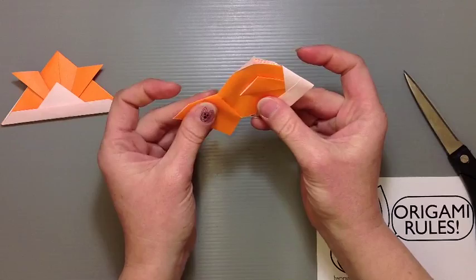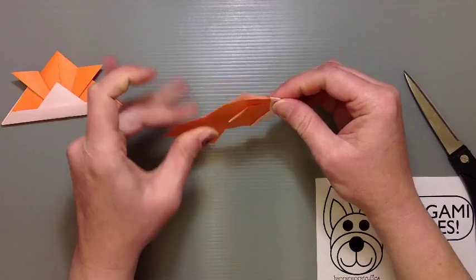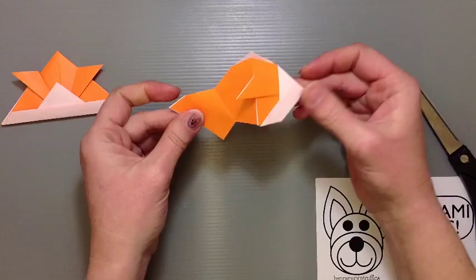Bring everything closed again and you've got your little fishy here. You can tell, depending on how far you made that angle, your tail would be leaning farther down or be more up. But that gives you your little finished goldfish, the first version.